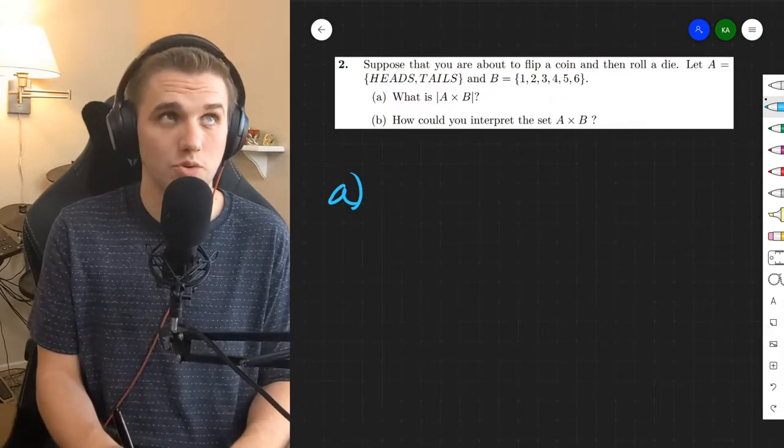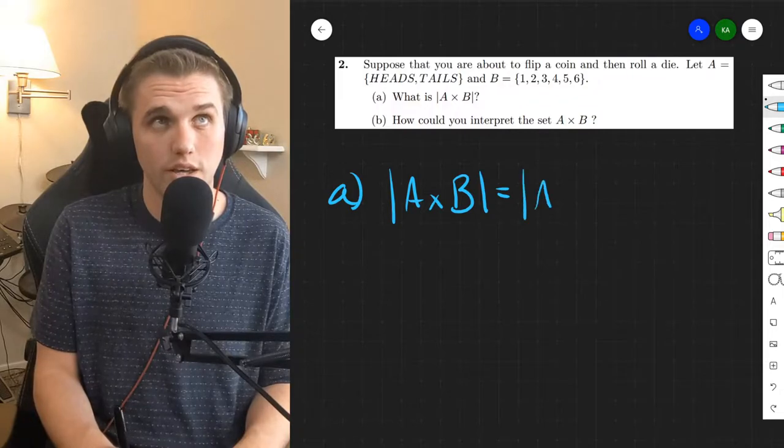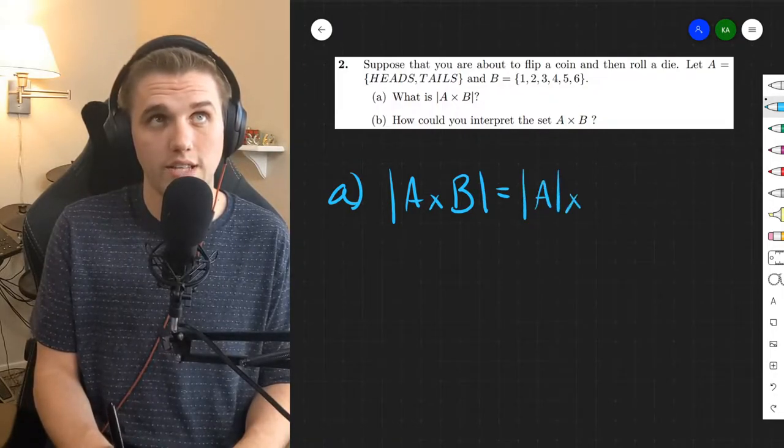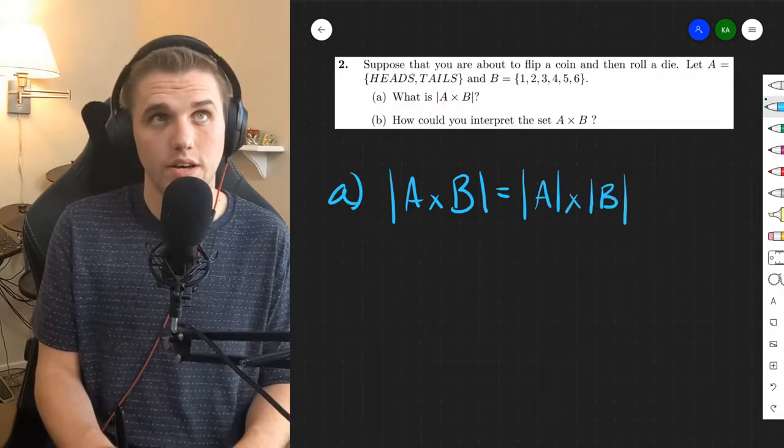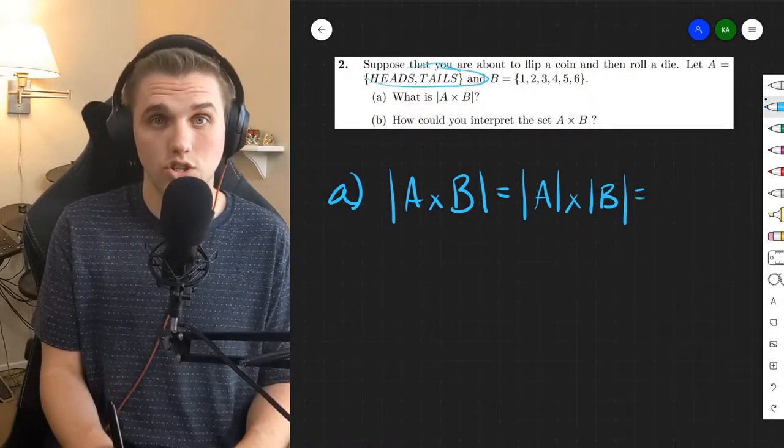The first way is the fast way. The size of the cross product, according to the textbook, is the size of A times the size of B and the size of A in this case is 2.